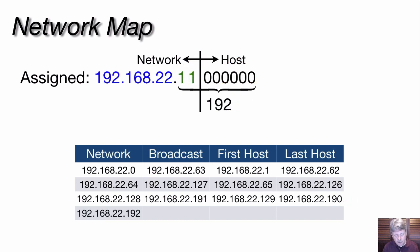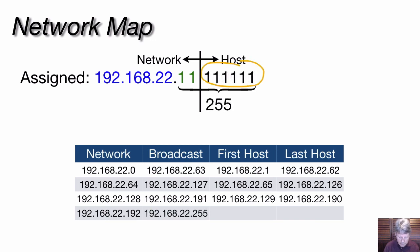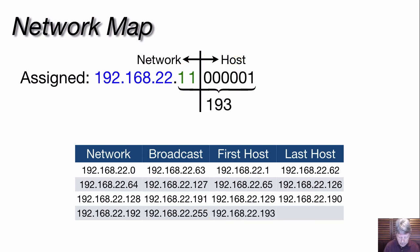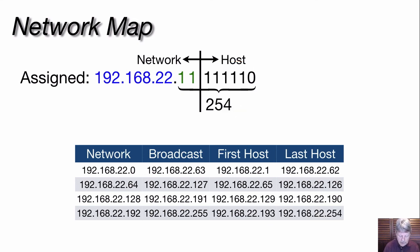For the fourth and final subnet, the subnet bits go to 11. With host bits all zero, converting gives us 192 as the subnet address. Setting all host bits to one gives a broadcast of 255. The first valid host address is 193 — all zeros with a one in the least significant bit. Converting all ones with a zero in the least significant bit gives us 254, our last valid host address.